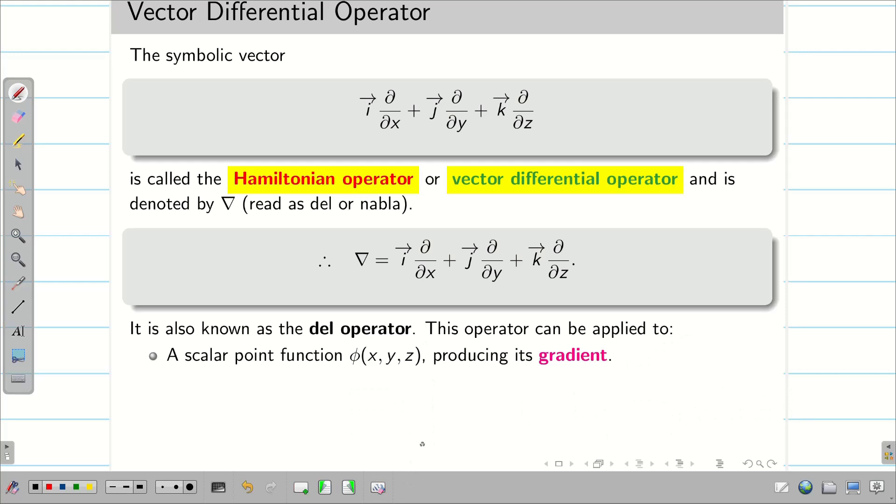Next, we can do two different products: cross product and dot product. For this, I am going to take a vector point function f. Then, I can do del dot f vector and del cross f vector. Del dot f vector is known as divergence of the given f vector. Del cross f vector is known as curl f vector. We are going to use these three in our problem solving purposes.